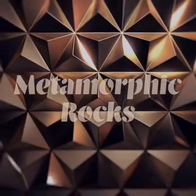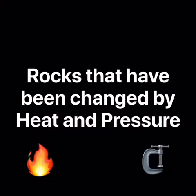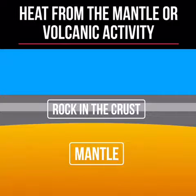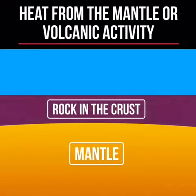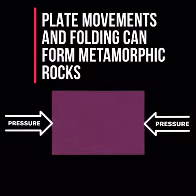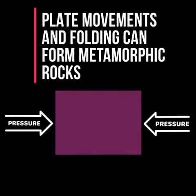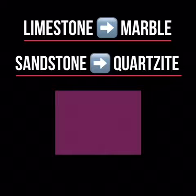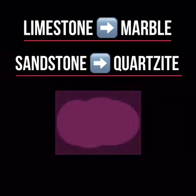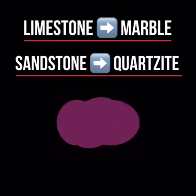Metamorphic rocks are rocks that have been changed by heat and pressure. Heat from the mantle or nearby volcanic activity can change rocks in the crust. Plate movements and folding can also form metamorphic rocks due to increased pressure. Limestone can become marble and sandstone can become quartzite.